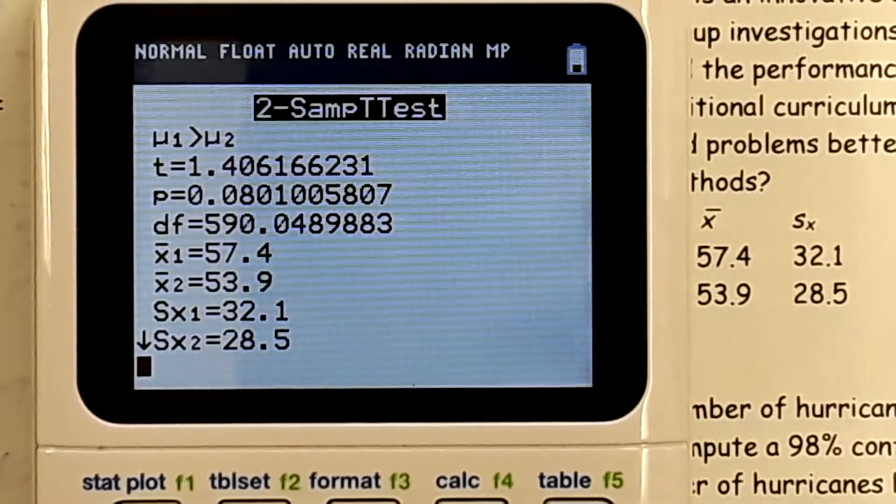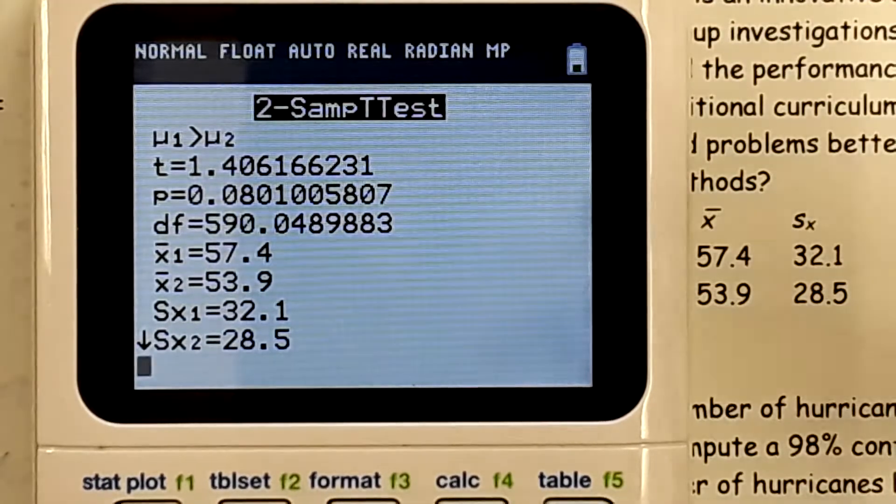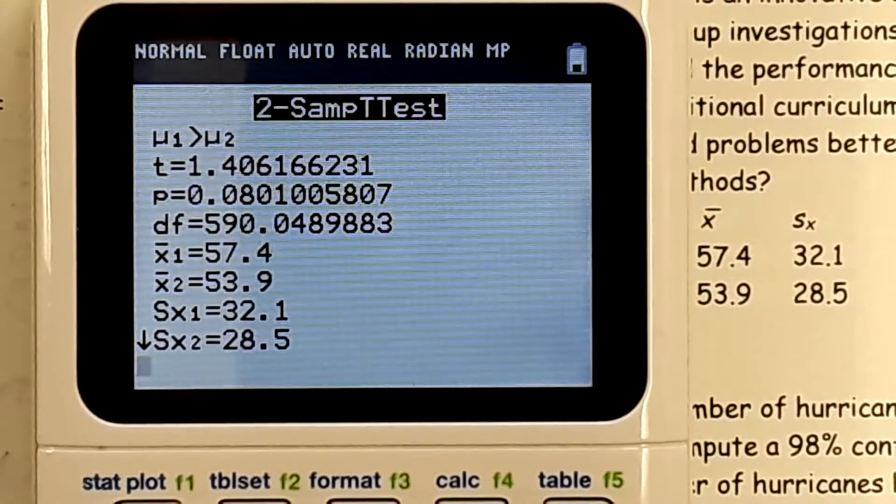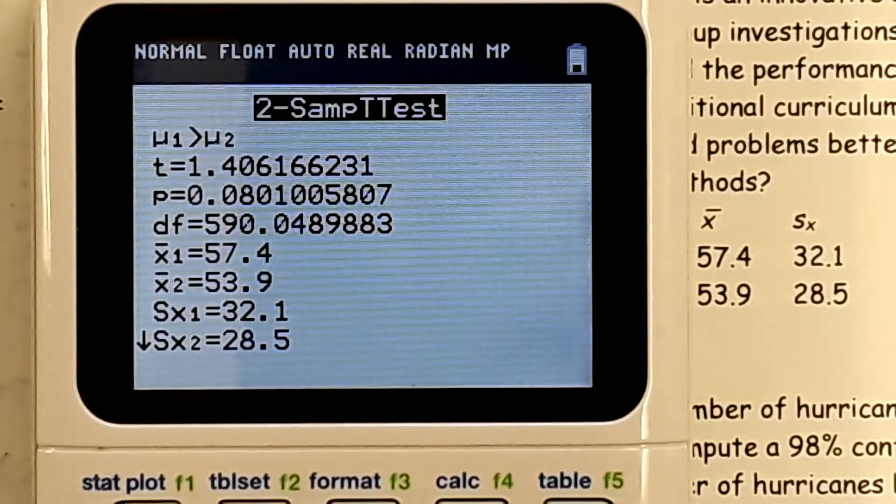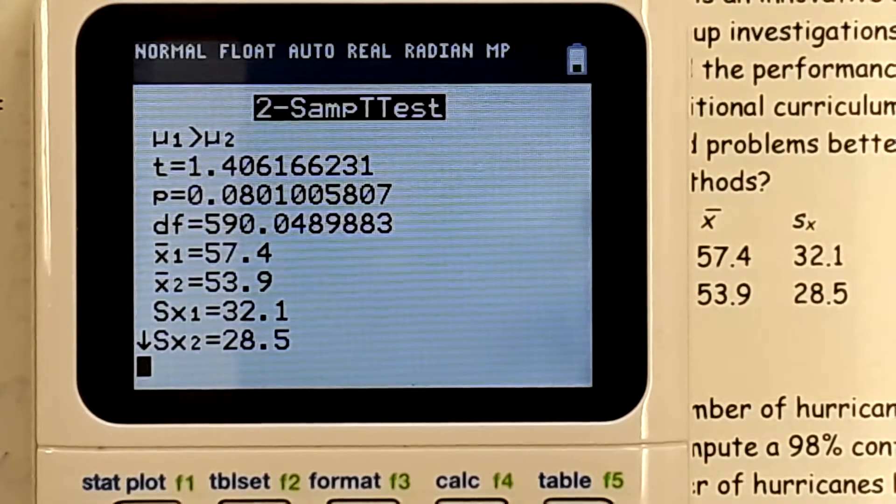So we would fail to reject at the 1% and at the 5%. So not at the 10%, but at the 1% and the 5%, the two that we would pick most often, we would fail to reject it. That's what that question is asking us.